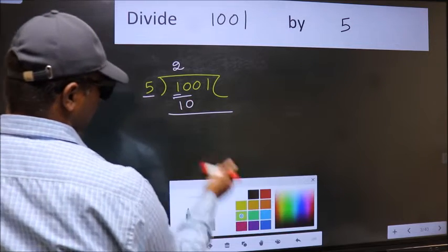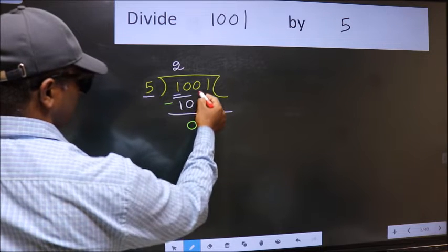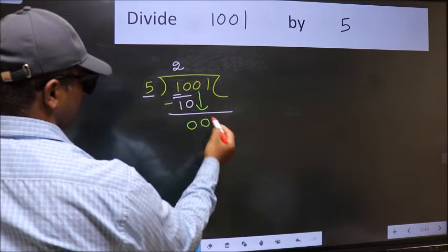Now we should subtract. 10 minus 10, 0. After this, bring down the beside number. So 0 down.